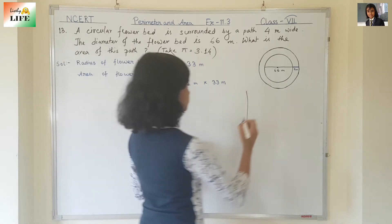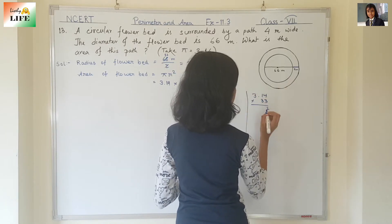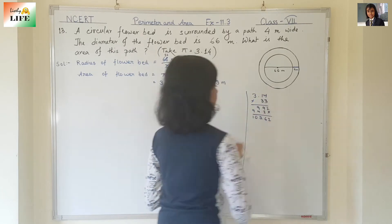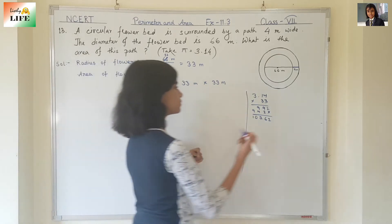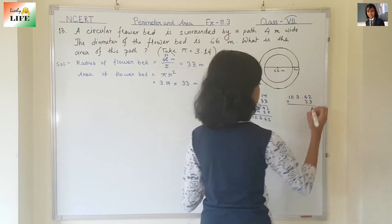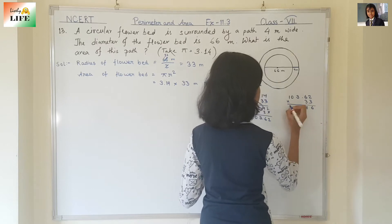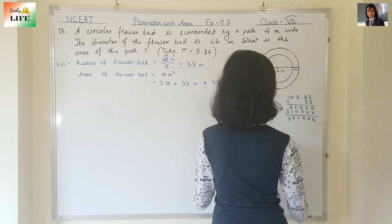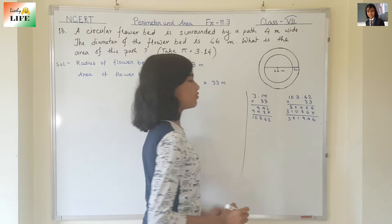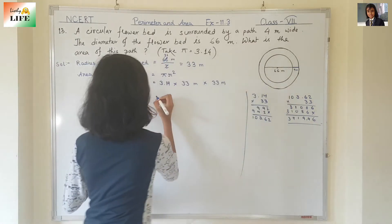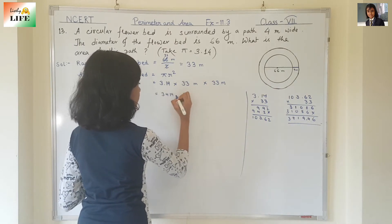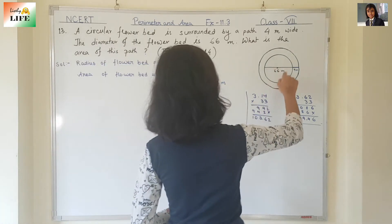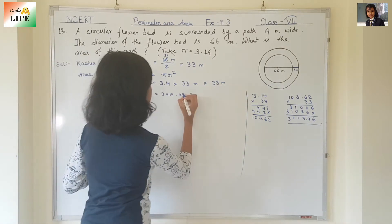Let's multiply: 3.14 into 33 into 33. That gives us 3419.46 meter square. Because this is area, we always write meter square. So the area of the flower bed is 3419.46 meter square.